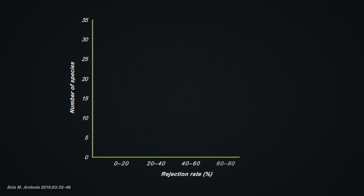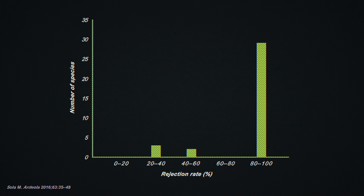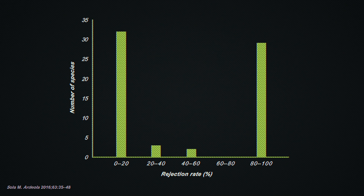One study found that many birds in North America can reject foreign cowbird eggs at a rate close to 100%, either by destroying them, or by deserting the nest completely. But it also found that many other species in the same region don't even reject them at all, with rates close to 0%. So why don't some birds try to reject parasites?